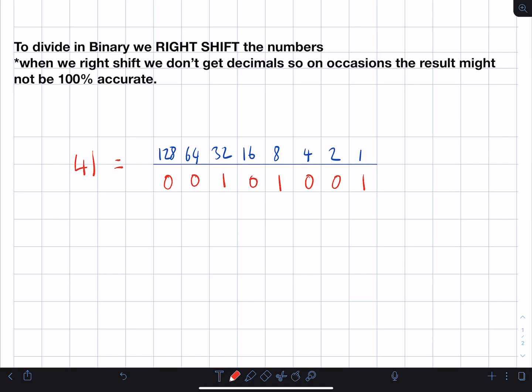Right, so when we want to divide in binary, we do what we call a right shift. This is kind of the opposite to multiplying. Now, one thing to bear in mind when we right shift is because binary doesn't have decimals, we might not get a result that's 100% accurate. Okay, so we'll test that out.